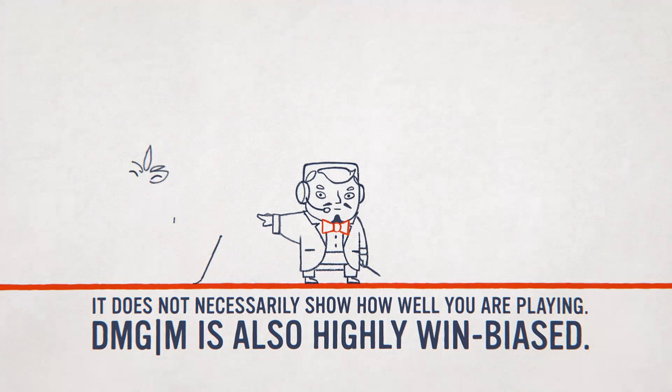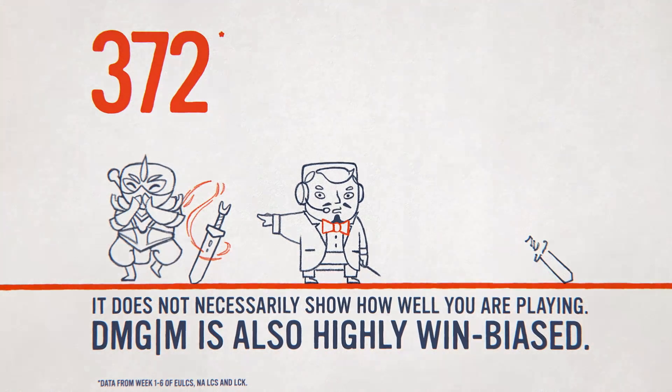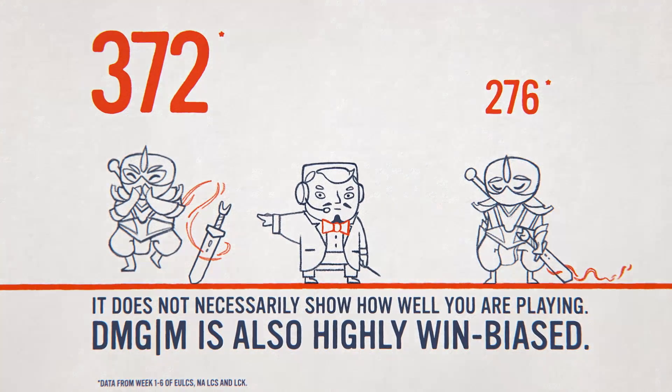Damage per minute is highly win biased. Look at Shen. The difference between his DPM in wins and losses is huge. But all is not lost. We can still use it to create a damage rating.